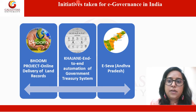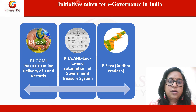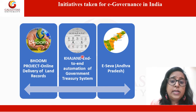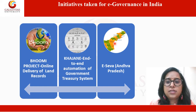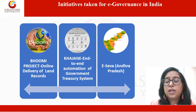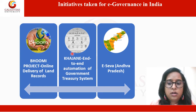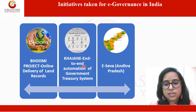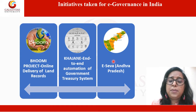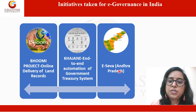Initiatives taken for e-governance in India: the first is the Bhoomi project launched by the Karnataka government for online delivery of land records. Bhoomi is a self-sustainable e-governance project for the computerized delivery of 20 million rural land records to 6.7 million farmers of Karnataka. The second initiative is Khajani, also launched by the Karnataka government, providing end-to-end automation of the government treasury system. It was implemented mainly to eliminate systematic deficiencies in the manual treasury system and for the efficient management of state finances.